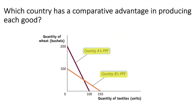In our PPF graph, we have country A and country B, both producing wheat and textiles. However, their competitive advantage in producing wheat or textiles are different from each other. By looking at their opportunity costs, we can identify each country's competitive advantage.